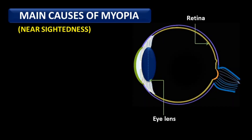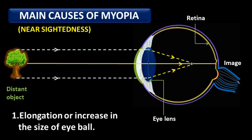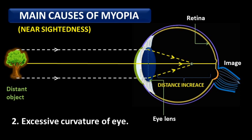The main causes of myopia: rays coming from a distant object, after refraction, meet in a single point in front of the retina, so the image is formed in front of the retina and is not clear. There are mainly two causes of myopia. First, elongation or increase in the size of the eyeball — due to this, the distance between the eye lens and retina increases, and therefore the image focuses in front of the retina. Second, excessive curvature of the eye lens — the eye lens becomes thick, the focal length decreases, which results in the formation of the image before the retina.